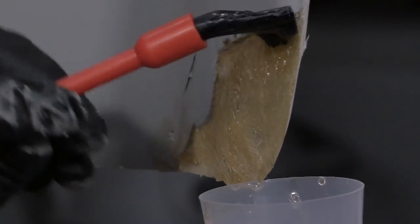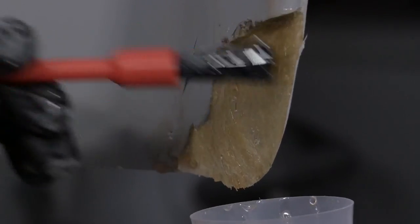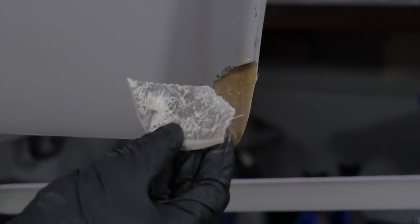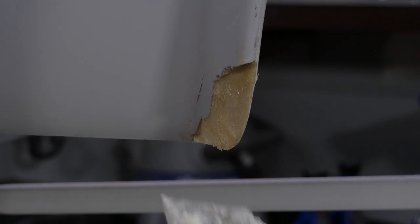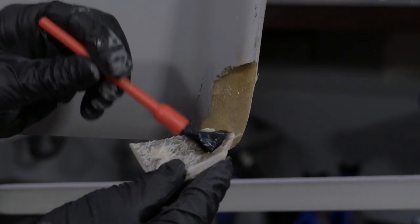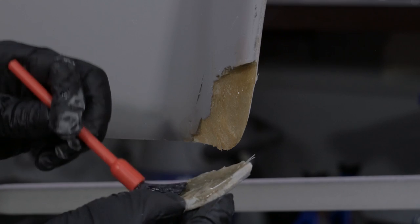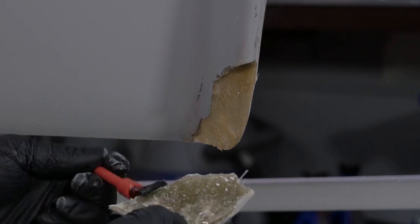We're applying the catalyzed resin to both sides of the repair, both on the subject fender and the pieces that have broken off. And allow the resin to kick or to cure. This should take about 15 to 30 minutes.